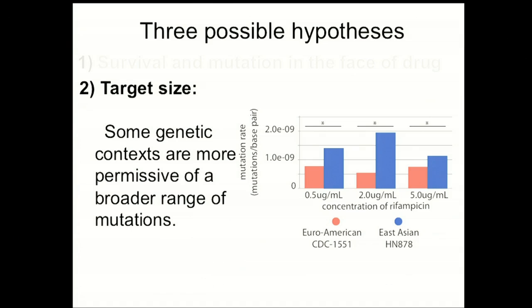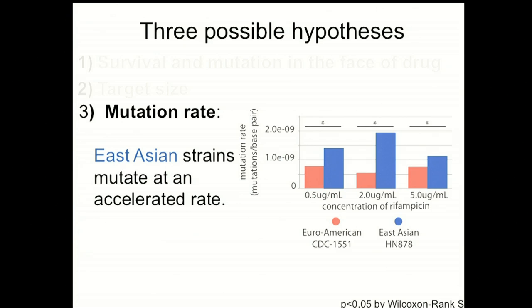But what we really want to know is whether this slight difference in target size is enough to explain the difference in mutation rate. To do that, we go back to our fluctuation analysis data and normalize it for target size, giving us the per-base mutation rate for each strain. There we find that the per-base mutation rate is significantly higher on each drug concentration for the East Asian lineage, supporting the idea that it is our mutation rate hypothesis that explains most of the difference in our data.